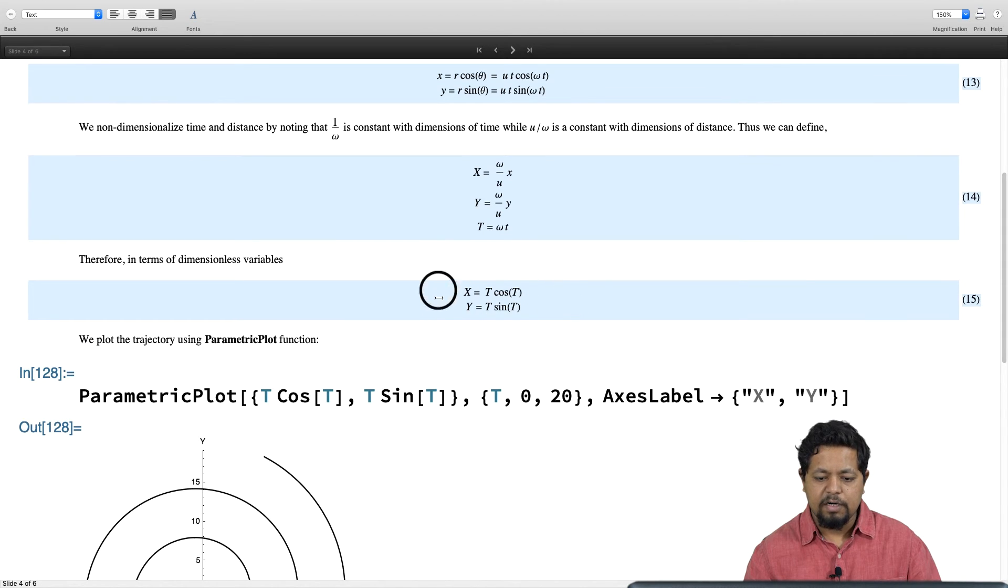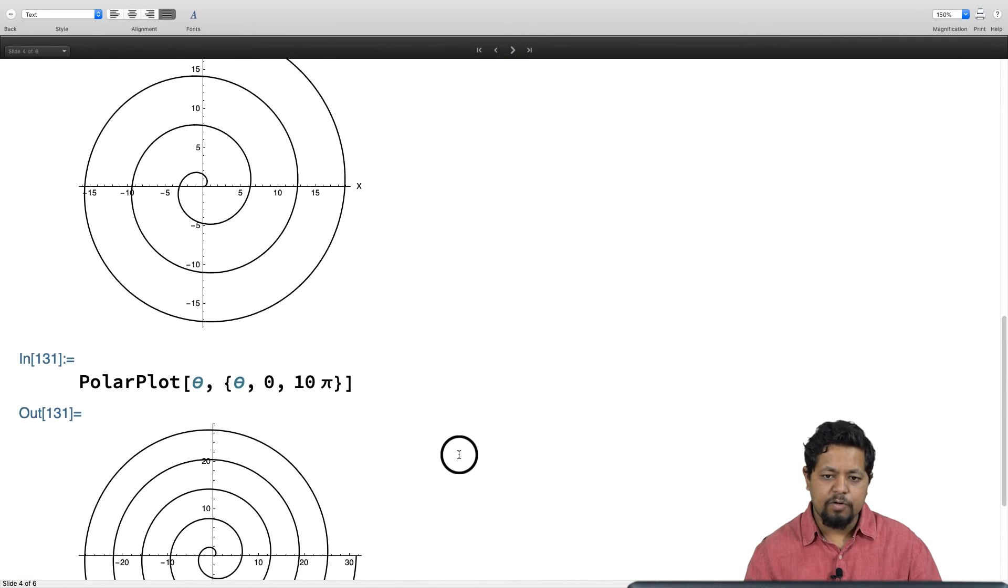The equations that we have obtained over here do not contain any u and omega—they are independent of u and omega. That is why our solution or this plot is independent of u and omega.